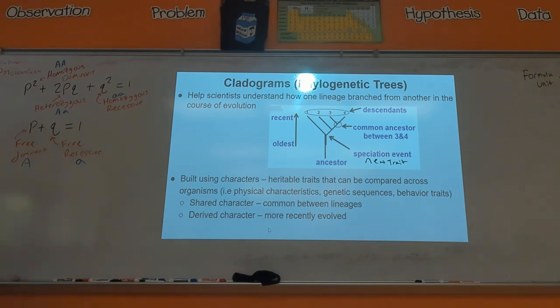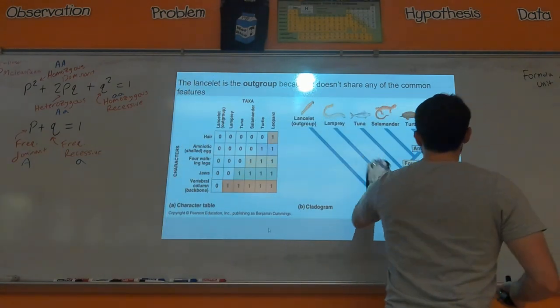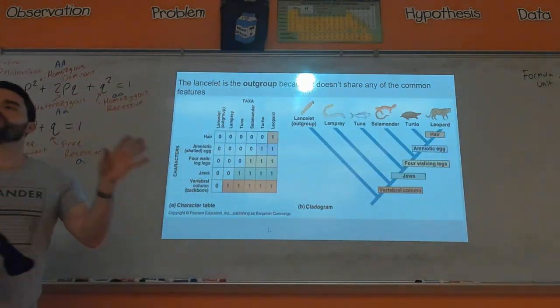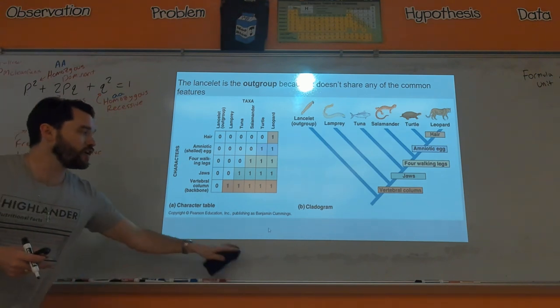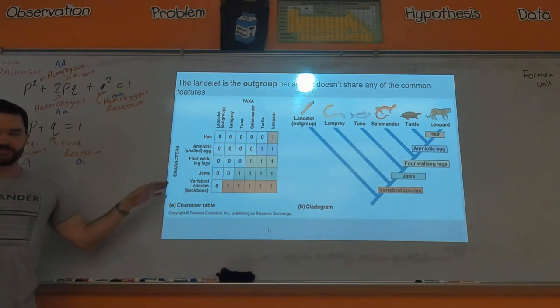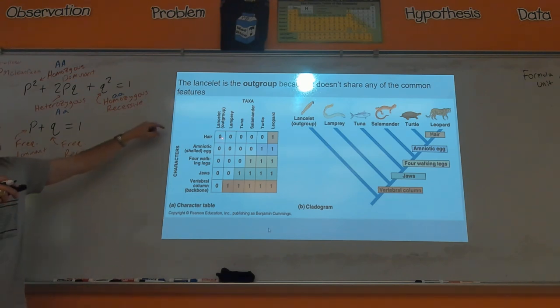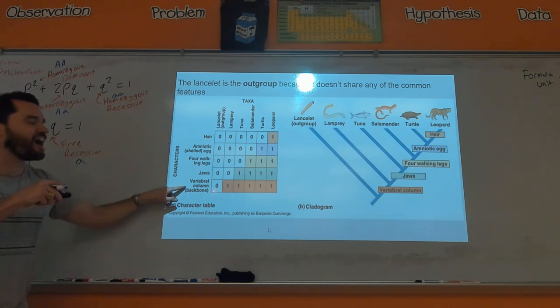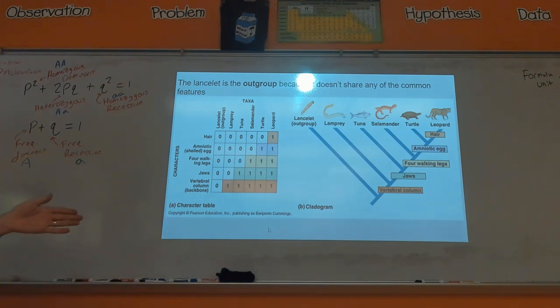We'll look at things called shared traits and derived traits. Let me go to the next slide and look at an actual one to explain it. You need to be able to know how to read one of these but also how you would make one. How you make one: you would start with a character table. In this character table we're looking at six different organisms up here and we're looking at six different characters. If you have a one, that represents that you have the character; if it's a zero, you don't have the character. So you'll notice here that only the leopard has hair.